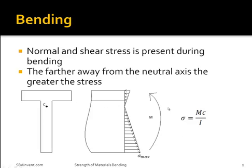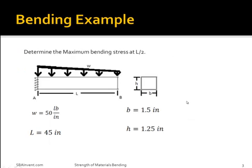To calculate this stress, you would use the equation shown here. In this equation, you would have moment times the distance of the point that you're interested in from the neutral axis, all divided by your area moment of inertia. Using what you know about shear and moment diagrams, along with area moment of inertia, and the equation that I showed on the previous slide, I would like you to try to determine the maximum bending stress at the length L over 2.